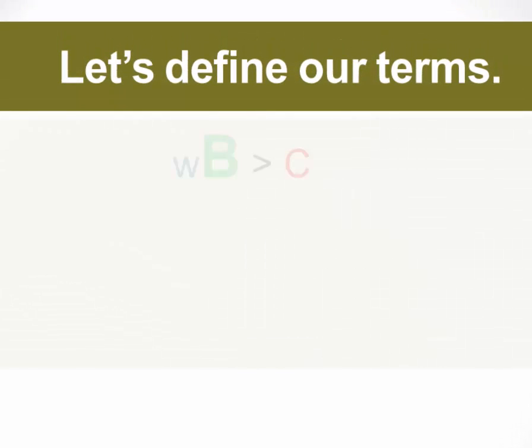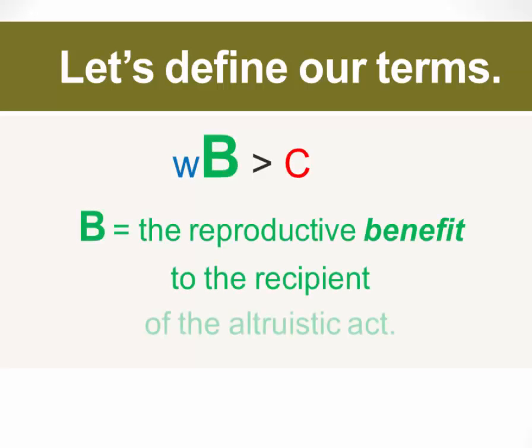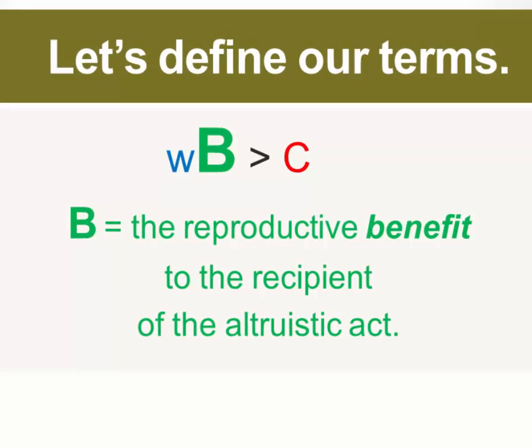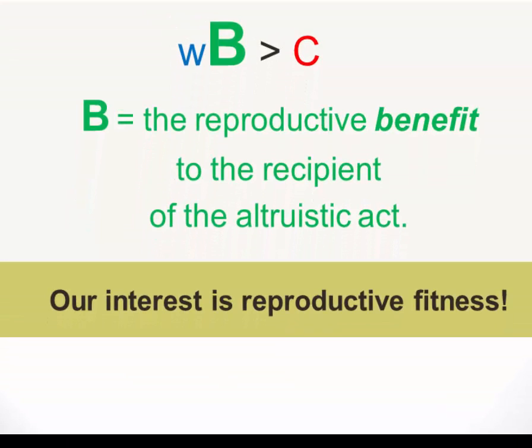Let's define our terms. We'll start with the letter B. Just as in Hamilton's Rule, the letter B stands for the reproductive benefit that goes to the recipient of an altruistic act. So B has the same meaning in Axelrod's Rule that it does in Hamilton's Rule. In both cases, our primary interest is in reproductive fitness. This is how we're measuring our cost and benefits.